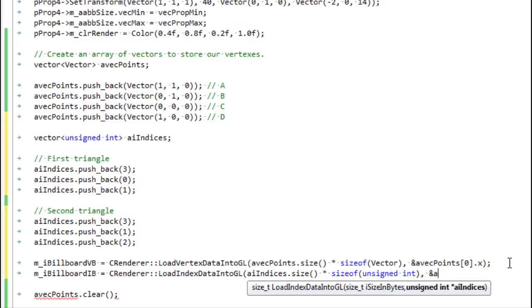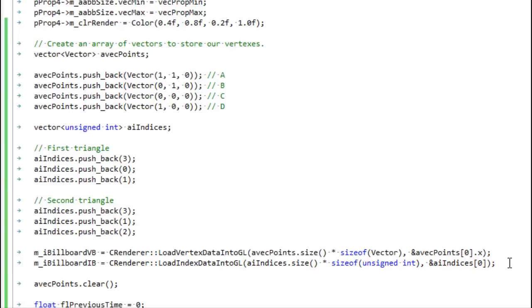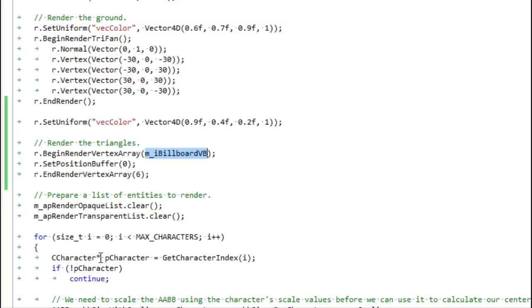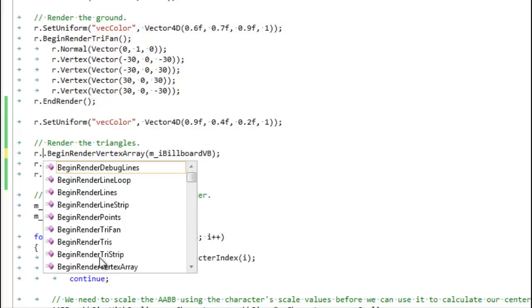There we go. Same thing as the points array - we can clear out the indices when we're done with them. They've been passed into the video card, now we're done with them. The video card has that memory and all we have to do is draw it.